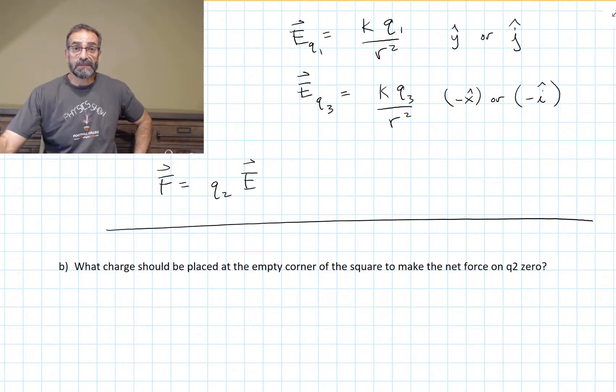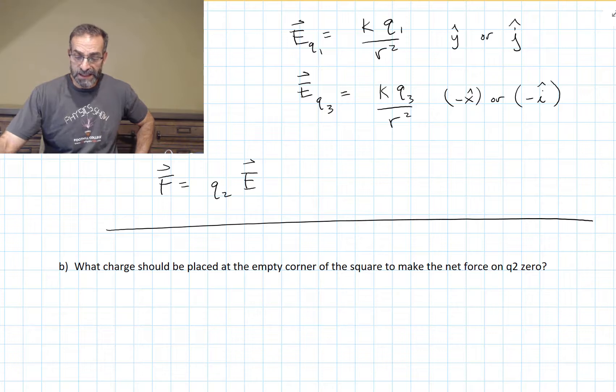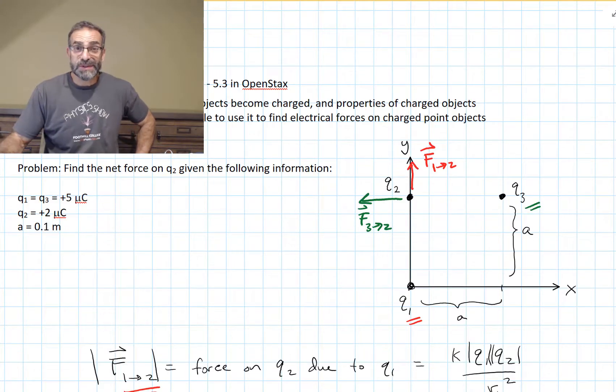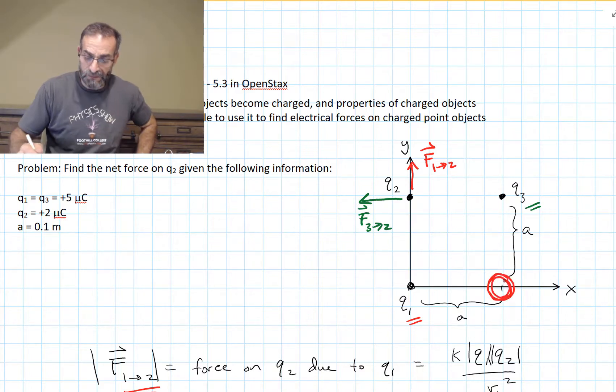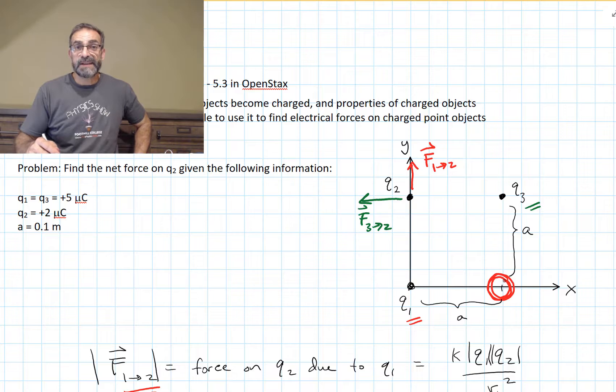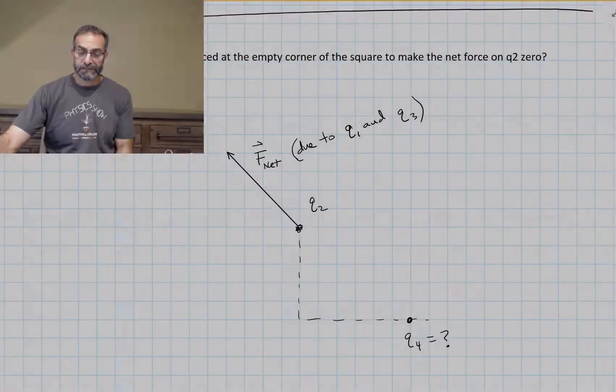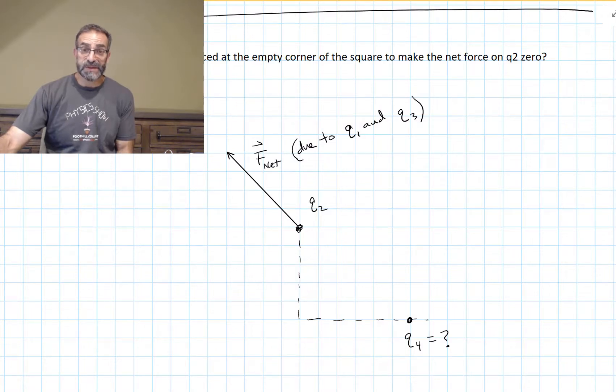How about we check to make sure? Let's add a part B to this problem. What charge should be placed at the empty corner of the square such that the net force on Q2 is zero? So what I'm asking is, what charge should be placed right here at the empty corner of the square such that the net force on Q2 is zero? So pause the video and see if you can figure that out, and then come back and check.